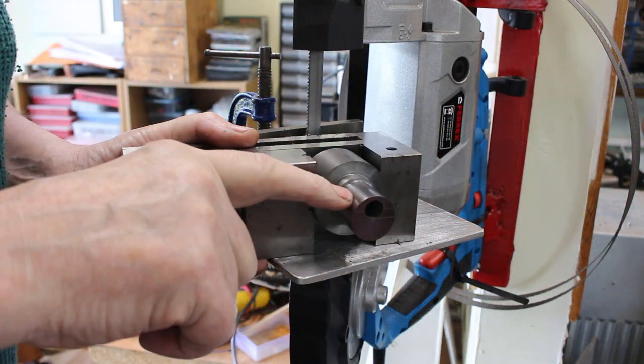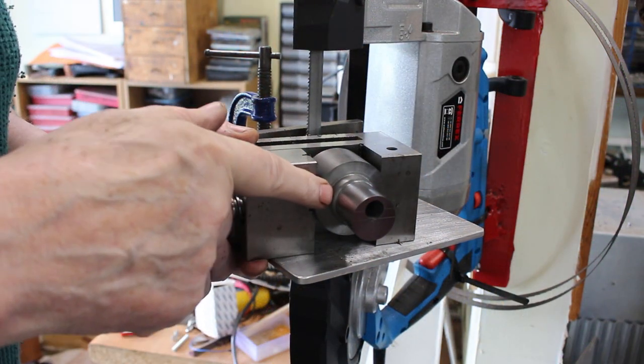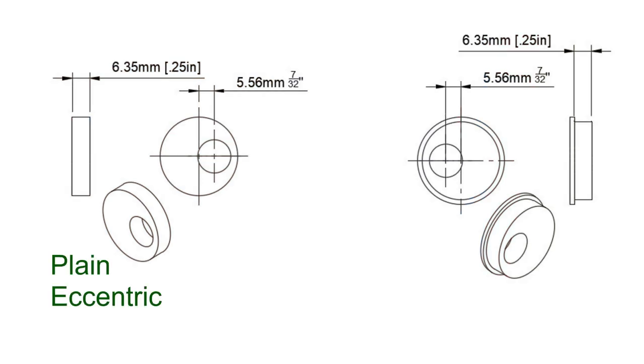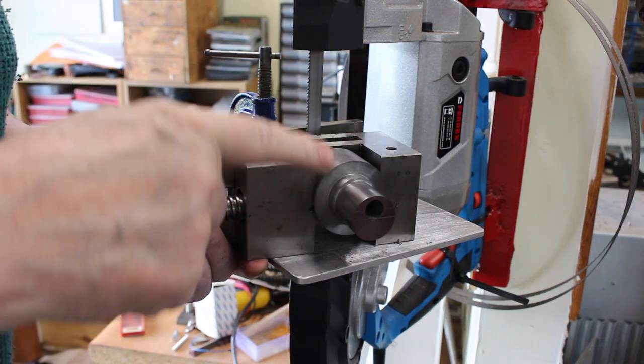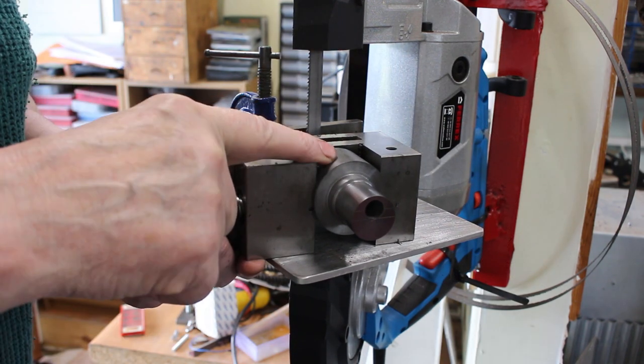So this will give me two plain eccentrics and one flanged eccentric. Then I'll have to put it back in the lathe to get another flanged eccentric.